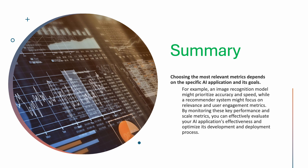In summary, choosing the most relevant metrics depends on the specific AI application and its goals. For example, an image recognition model might prioritize accuracy and speed, while a recommendation system might focus on relevancy and user engagement metrics. By monitoring these key performance and scale metrics, you can effectively evaluate your AI application's effectiveness and optimize your development and deployment process. Thank you.